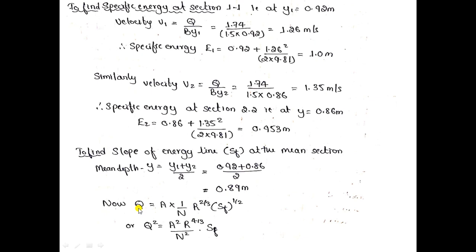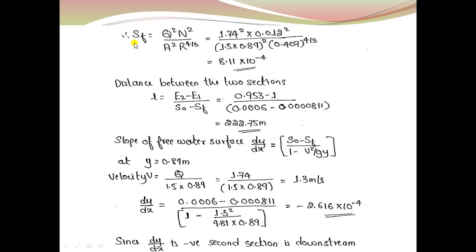Using Manning's formula rearranged: SF = Q²N²/(A²R^(4/3)). Substituting values at the mean depth gives SF = 8.11 × 10⁻⁴. The distance between the two sections is L = (E2 - E1)/(S0 - SF) = 222.75 m.